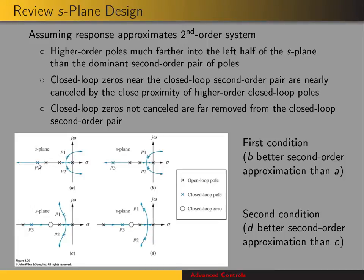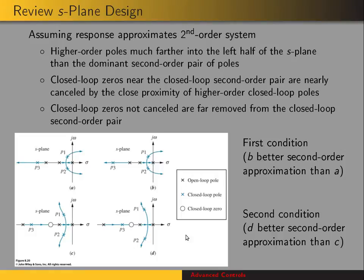Having a more negative real part simply means that its effect will die out faster. Another way we can assume a second-order response is if the closed-loop zeros near the dominant second-order pair are almost canceled by the proximity of a higher-order closed-loop pole. Figures C and D show that — with three poles and a zero, when P3 is closer to the zero, the effect of that zero is mitigated, giving a closer second-order response.